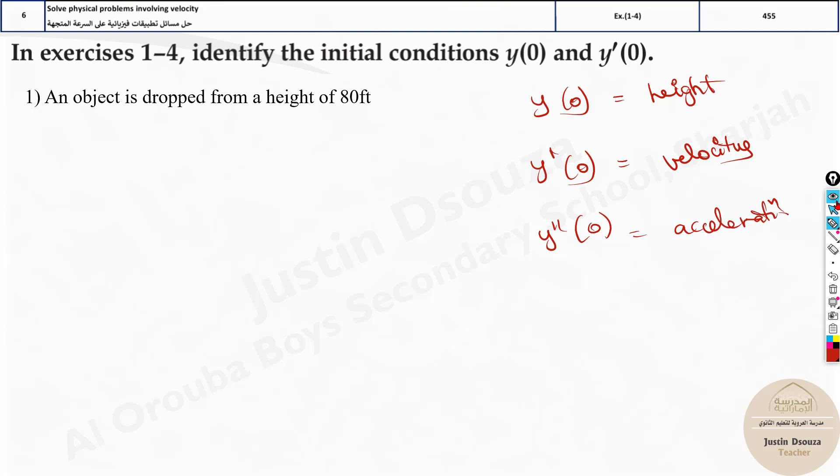So that's the things. Now over here what is given? Only the height is given. So it's y of 0, that is 80 feet. That's it. Is the velocity mentioned? No, velocity is 0.